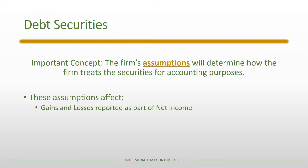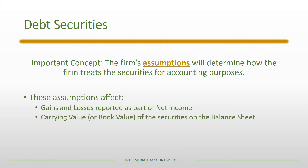Importantly, the assumptions can affect the way gains and losses are reported as part of net income, so an income statement could look very different depending on the assumptions being made about the asset. In addition, the balance sheet can also look very different. Some debt securities might be listed at their original acquisition cost or at the amortized cost; others will be listed at fair value. The assumptions are going to drive these differences.